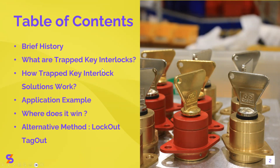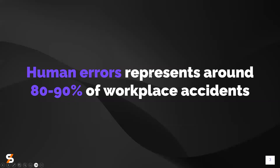I would like to start with this statement: according to HSE experts and safety organizations, human errors represent around 80 to 90 percent of workplace accidents, which is quite a lot. It means that at least four accidents out of five could be prevented, and when we know the dramatic consequences that some of these accidents can have, it is really crucial